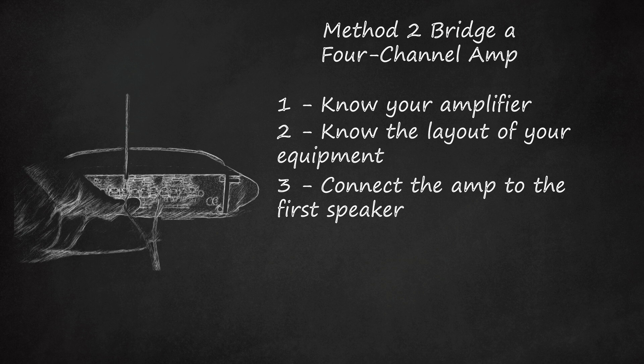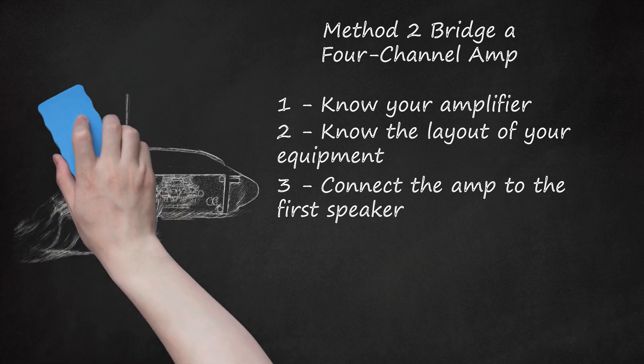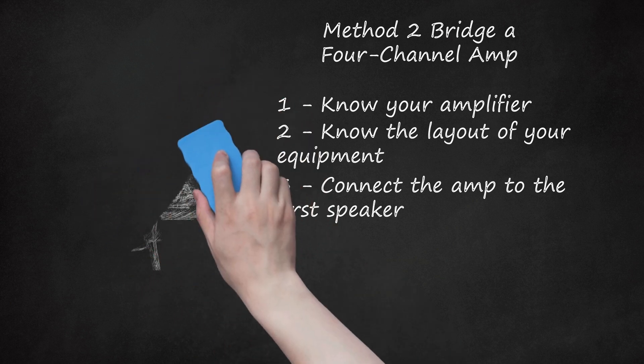Again, just like bridging a 2-channel amplifier, connect these speaker wires to the amplifier by unscrewing the screw in whichever terminal you are connecting the wire to. Place the wire in between the top and bottom portions of the terminal, and then screw the screw down tightly to secure the wire. Once the wires are secured, the first speaker is connected to the amplifier.